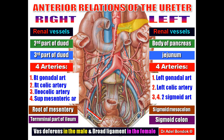To summarize the anterior relations of the right ureter from above downward: renal vessels, second part of the duodenum, third part of the duodenum, four arteries (gonadal, right colic, ileocolic, superior mesenteric artery), root of the mesentery, terminal part of the ileum, and vas deferens or broad ligament. For the left ureter: renal vessels, body of the pancreas, jejunum, four arteries (left gonadal, left colic, two sigmoid arteries), sigmoid mesocolon, sigmoid colon, and vas deferens or broad ligament.